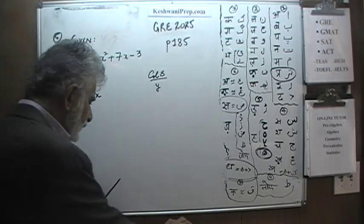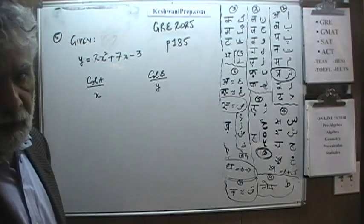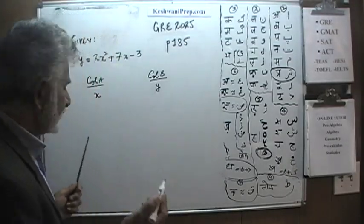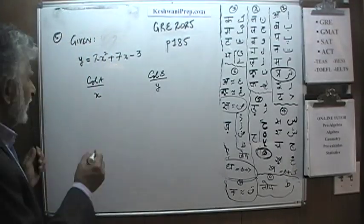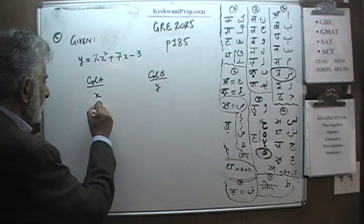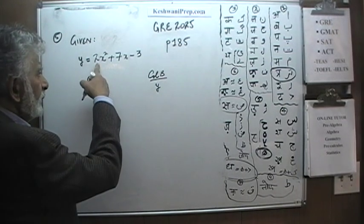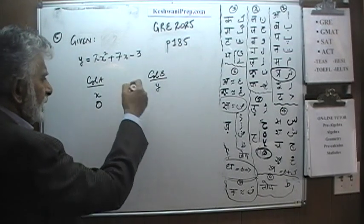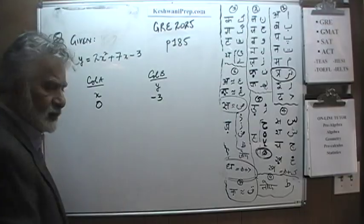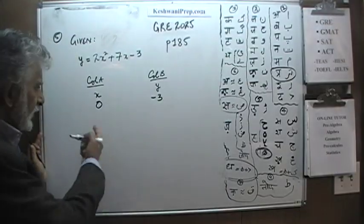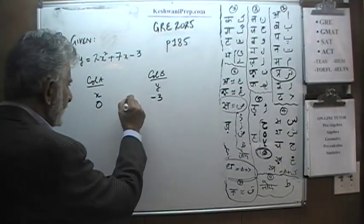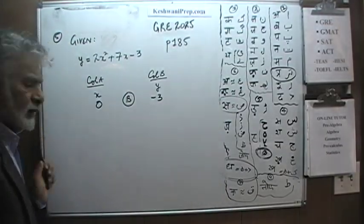Very straightforward, very simple as I said. Just plug in the values and that's all. Let's start with something simple. When x is equal to 0, this term drops out and it's negative 3 — y equals negative 3. Based on the work so far, the answer seems like B.